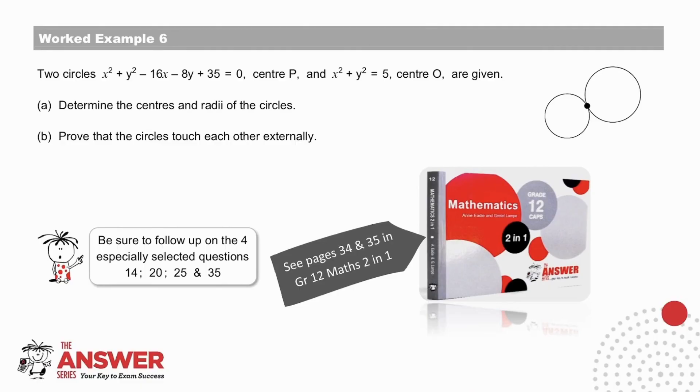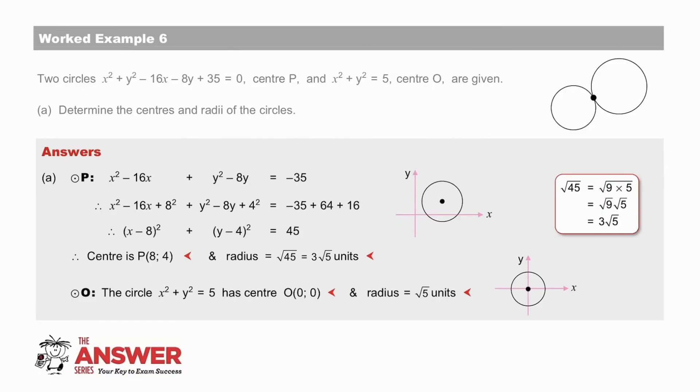Pause to do the last worked example. Pause to check your answers. Circle center P. We convert from the general form to the standard form, so that we can write down the center, 8, 4, and the radius equal to the square root of 45. Circle center the origin has a radius of the square root of 5 units.